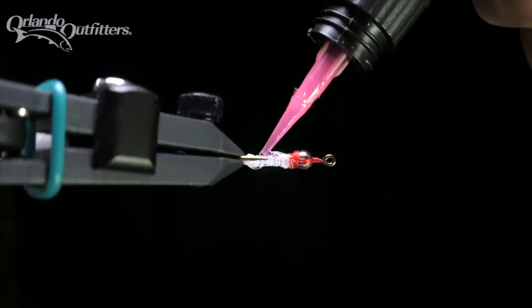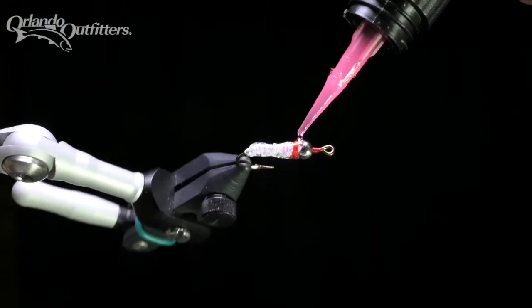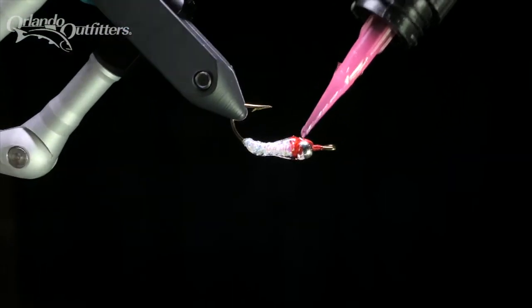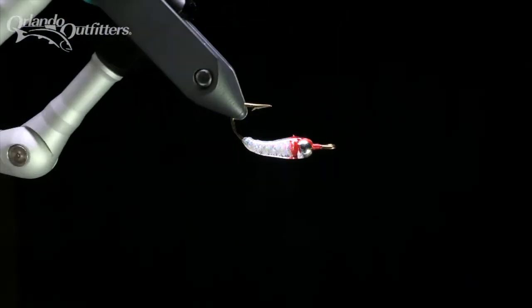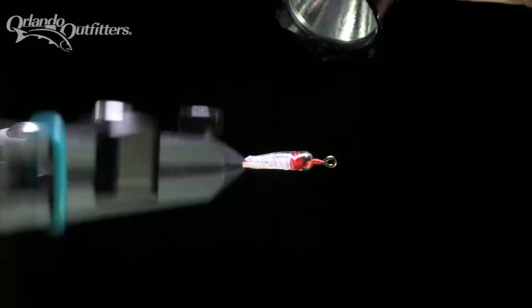Add enough resin to give the fly a smooth, even body. You can use the tip of the applicator to move resin around as needed. When you're happy with the size of the body and the overall shape, use the UV light to cure the resin.